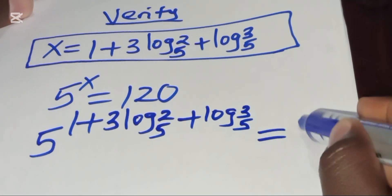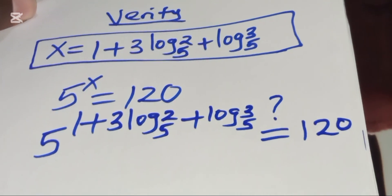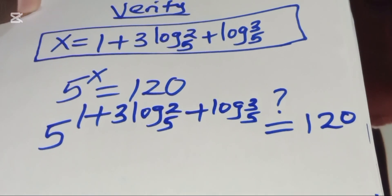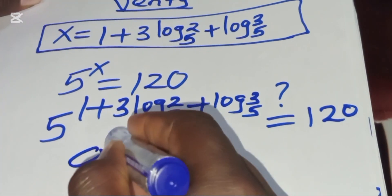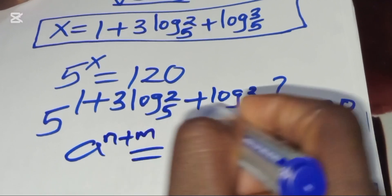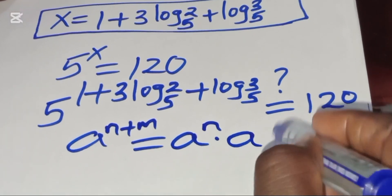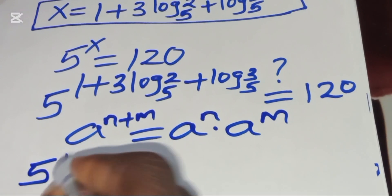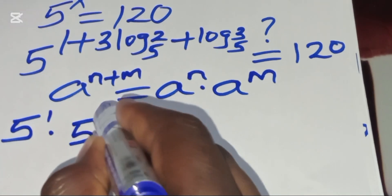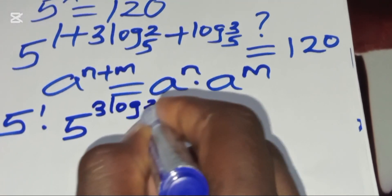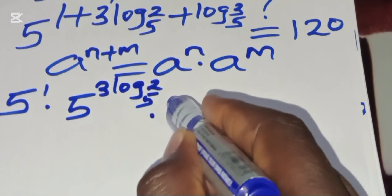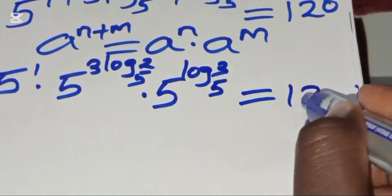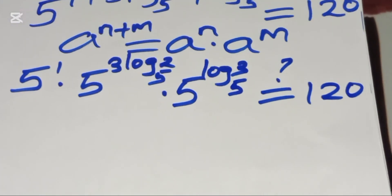We can see that 5^(1 + 3·log₅(2) + log₅(3)) is in the form a^(n+m) = a^n × a^m. Applying this indices property gives us 5¹ × 5^(3·log₅(2)) × 5^(log₅(3)), which should equal 120.